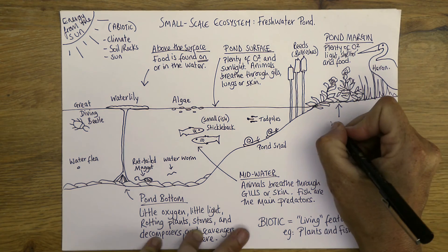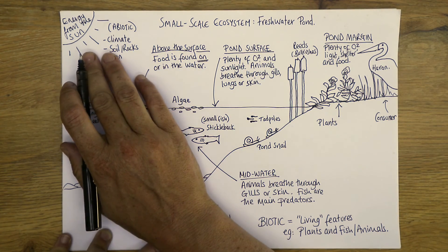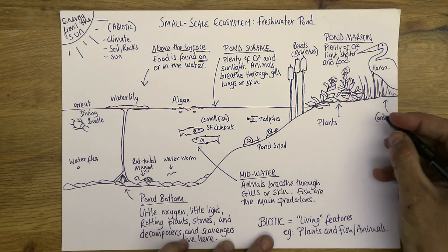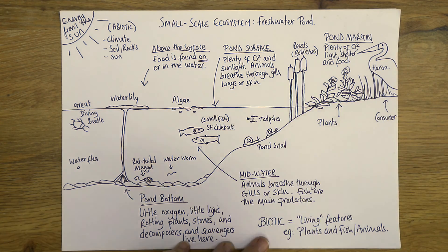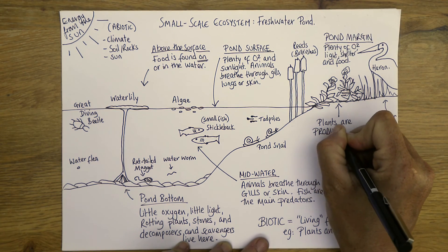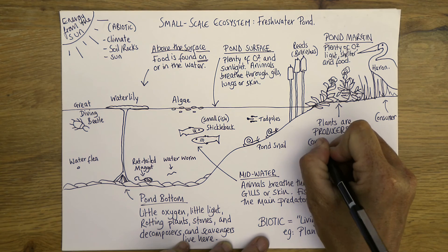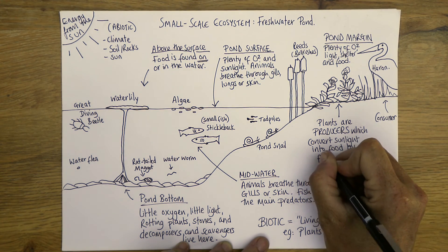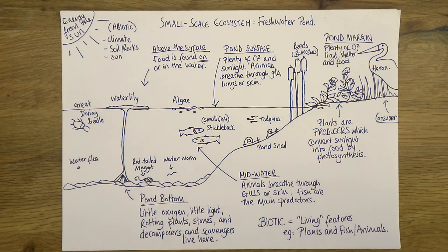The plants are producers. Plants basically just need sunlight and water — they mostly use sunlight to create glucose, which is a sugar, a type of food. They use photosynthesis to do that. A consumer like the heron can't make its own food from the sun — it needs to eat the plants or eat fish which feed on the plants. We'll come to food webs later, but plants are PRODUCERS, which convert sunlight into food by photosynthesis.